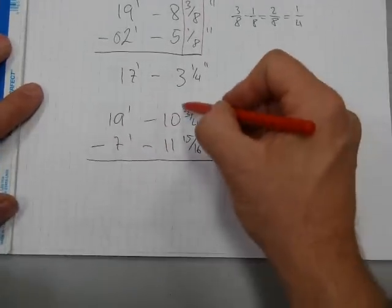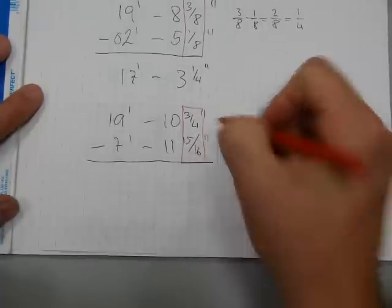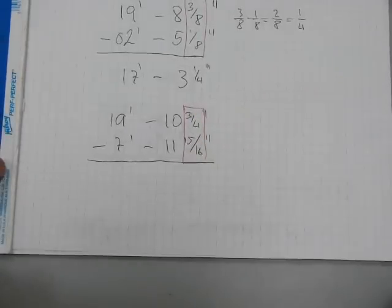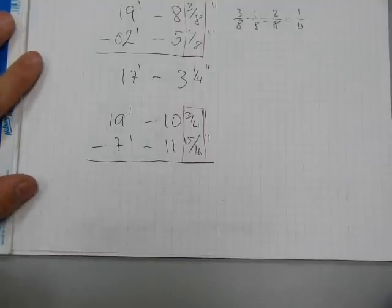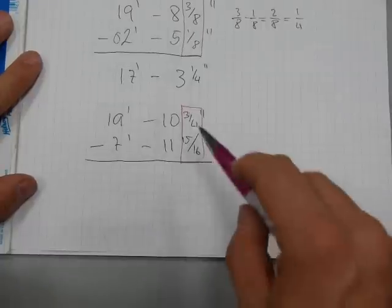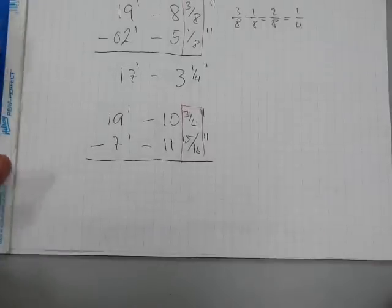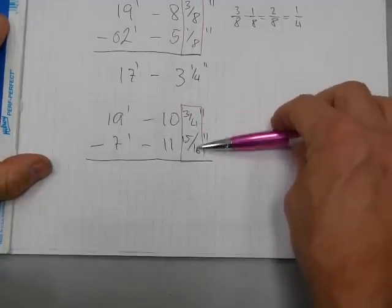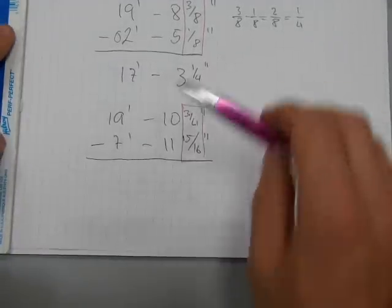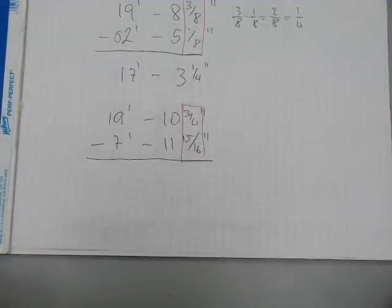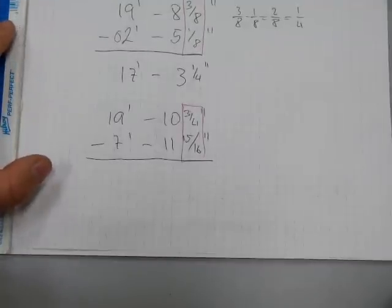same procedure applies. We have to start with the fractions. But how do we subtract 15 sixteenths, a fraction greater than 3 quarters? Now, if you already know that 3 quarters is the same as 12 sixteenths, you understand that you cannot take away from 12 sixteenths, 15 sixteenths. This must be increased. And this is where the tricky part is.